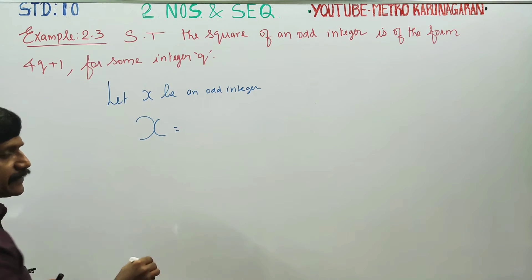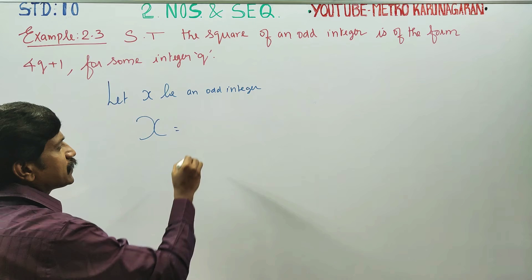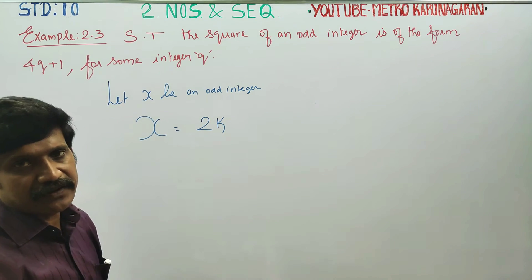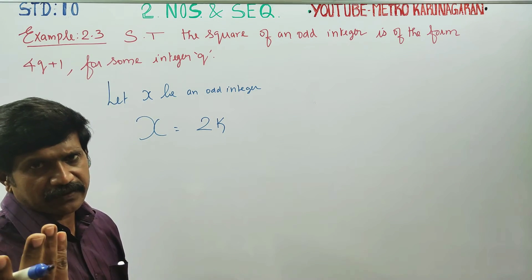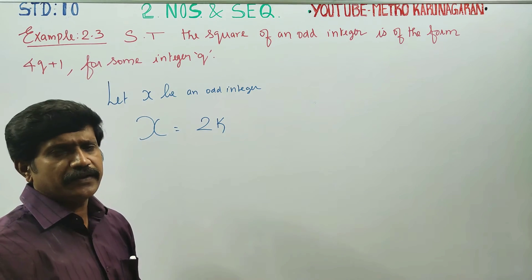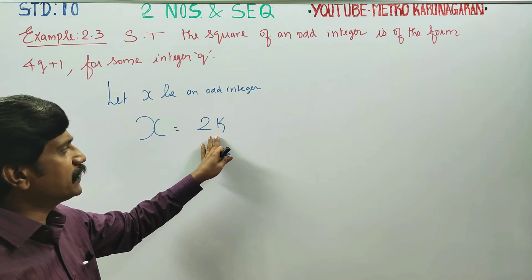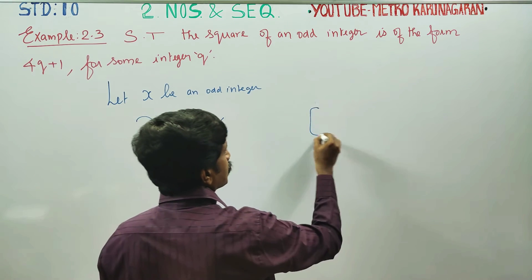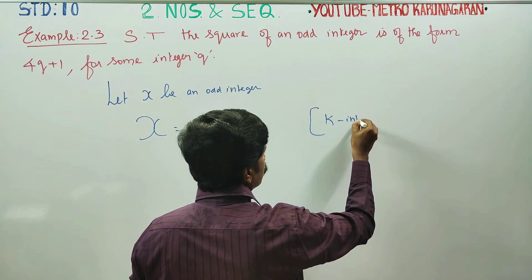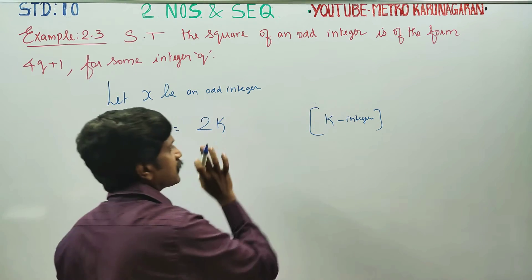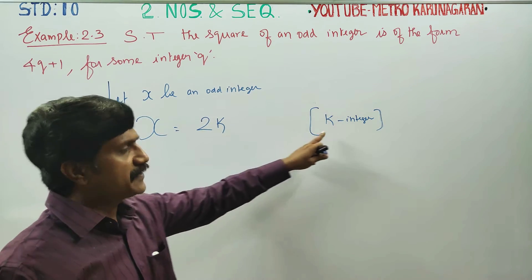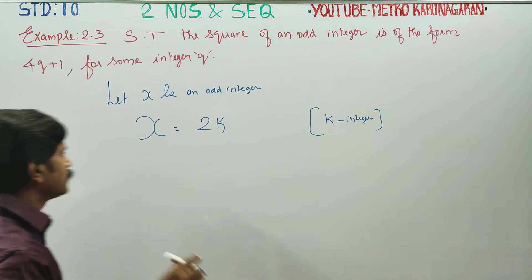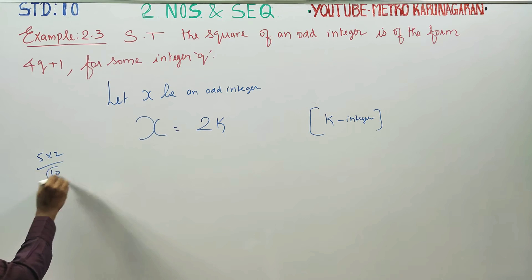How do you define an odd integer? 2 times k — what is 2 times k? It is an even number. Any integer k multiplied by 2 gives an even number. For example, 5 into 2 gives 10, which is an even number.